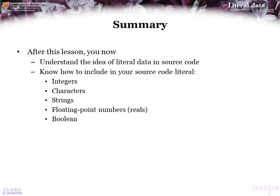Following this topic, you now understand the idea of having literal data in your source code. You know how to include literal integers, characters, strings, floating point numbers, and Boolean values. These are the only literal pieces of data you can include in your source code, so you now have a comprehensive understanding of what is available. In subsequent topics, we will also see how we can access such data from other sources, such as the keyboard or files.